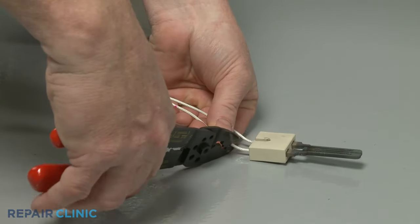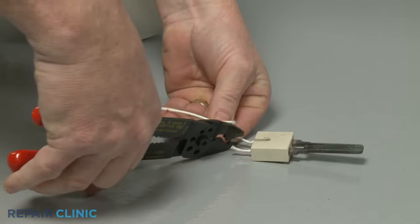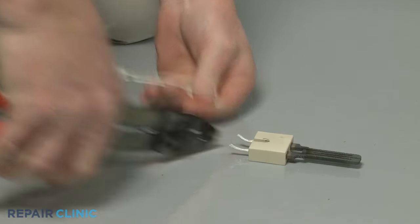Now cut the wires to separate the wire connector from the old igniter and strip off a quarter inch of insulation.